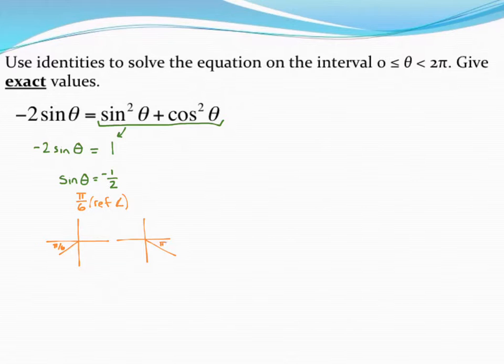There's a reference angle of pi over six. Then finding your two actual answers, you need to measure from the positive x-axis counterclockwise around the circle. There's going to be an answer and there's going to be an answer.